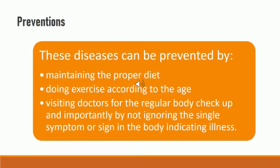Now the question arises: how can we prevent ourselves from these diseases? These diseases can be prevented in three ways. Number one: maintaining a proper balanced diet containing the maximum amount of proteins, nutrients, minerals, and carbohydrates. Number two: doing regular exercise, which is very necessary for our body. Number three: visiting doctors for regular body checkups, especially when you feel any sign or symptom of disease — consult your doctor immediately.